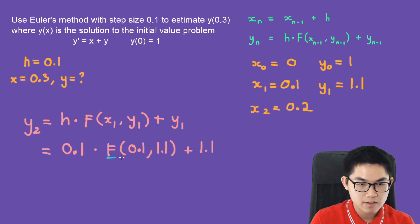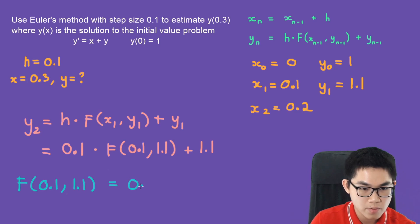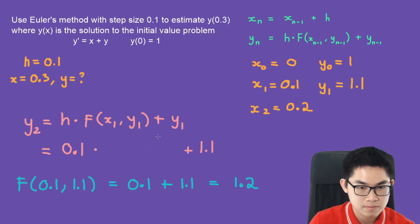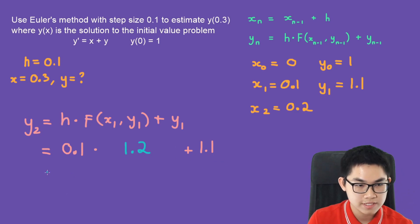Let's calculate this one. So f(0.1, 1.1) is equal to 0.1 plus 1.1, which gives you 1.2. And if you put this in your calculator, you get 1.22.